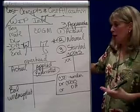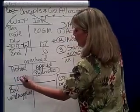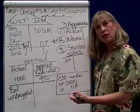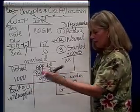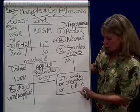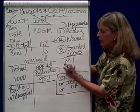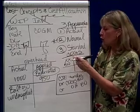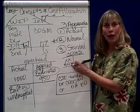Let's put some numbers here to make it clearer. If actual overhead was $1,000 and applied was $950, that means we underapplied and have a debit balance of $50. The closing entry would be: debit cost of goods sold $50, credit overhead $50. By posting this entry, cost of goods sold goes up, and we are now showing actual overhead.